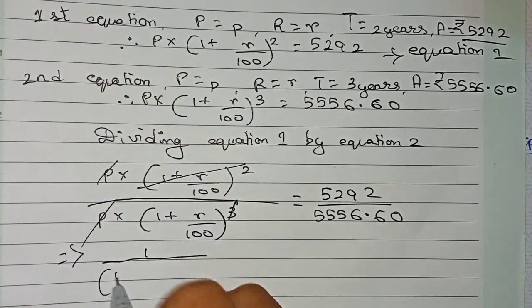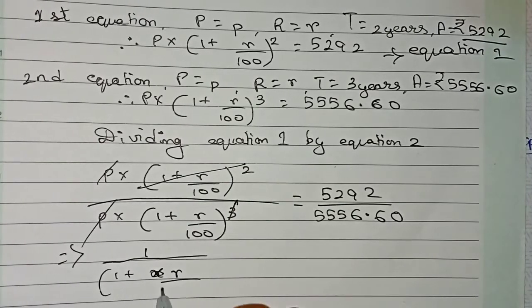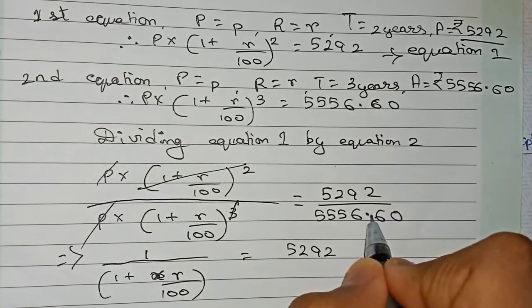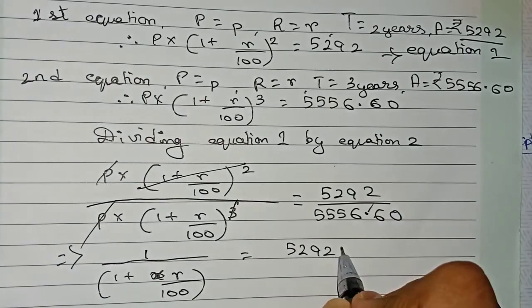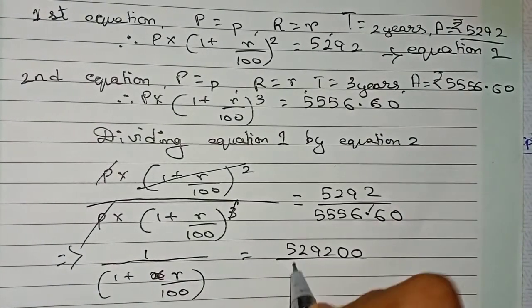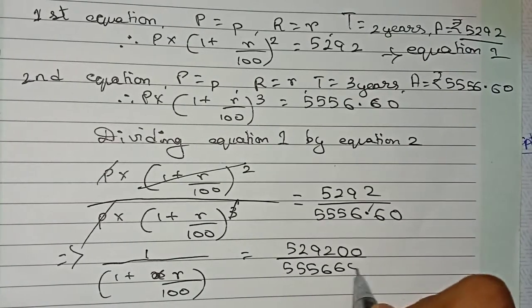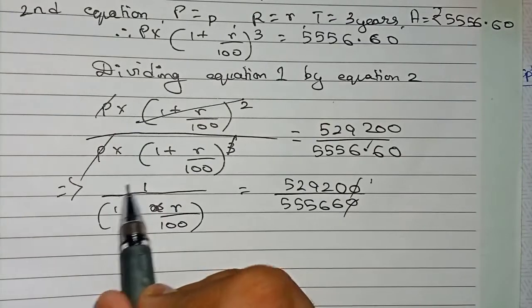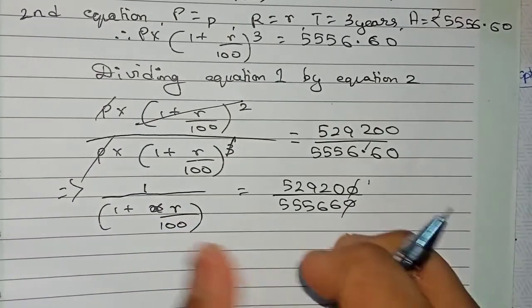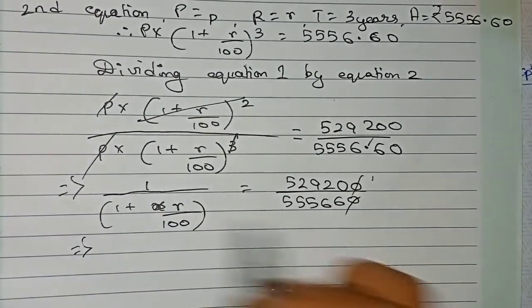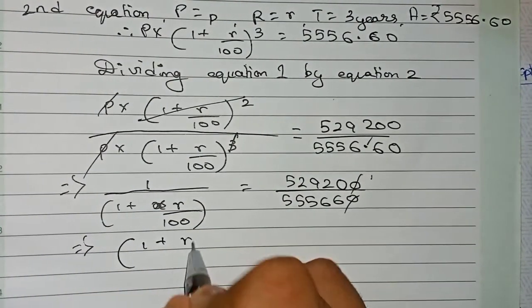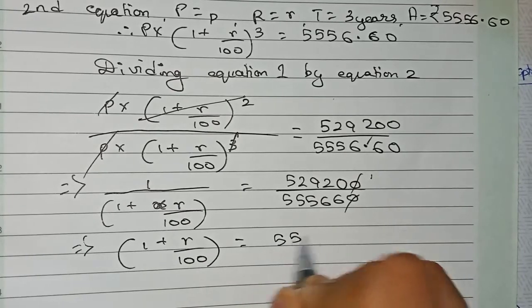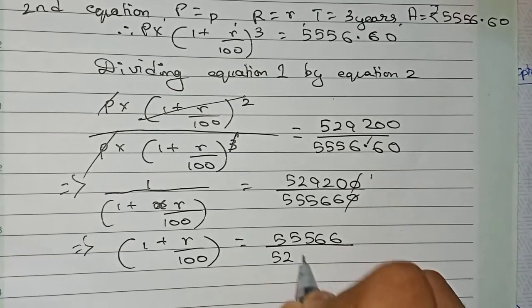So 1 plus R by 100 equals 5,556.60 divided by 5,292. So up to two decimal places, we write 55,566 on top and 52,920 on the bottom. Cut the zeros. Now to remove this, we reciprocal both numbers. So this side if we reciprocal, one will come around, so it becomes 1 plus R by 100.